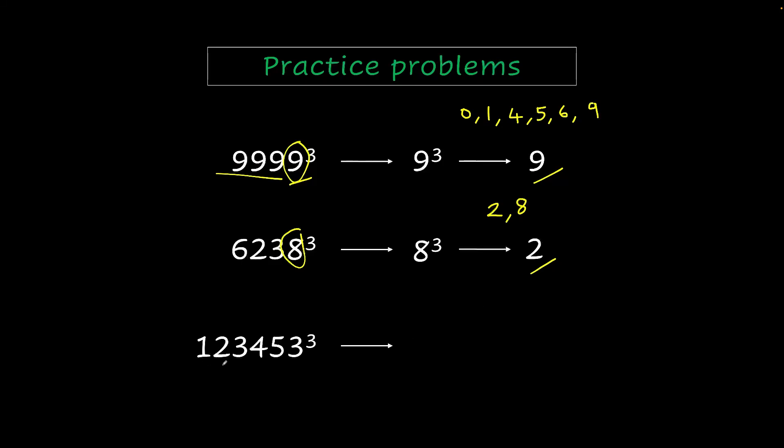And finally we have 123453 cube which is similar to 3 cube. And as we saw digits 7 and 3 swap places. So 3 cube ends with a 7. Great.